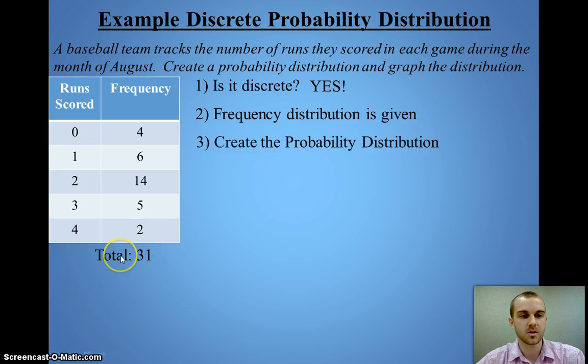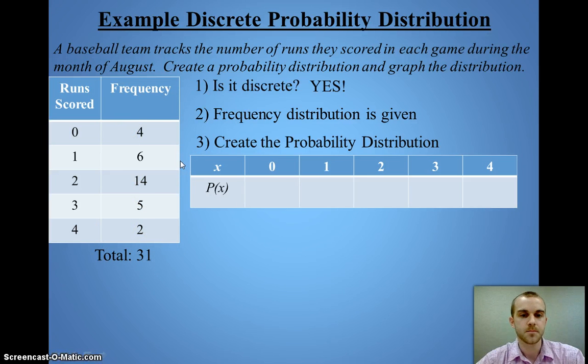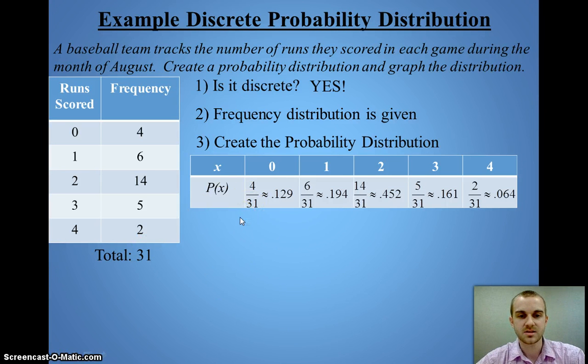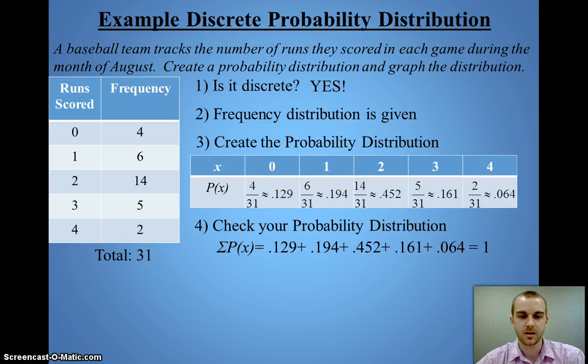I know there are 31 games that were played, and I could add up my frequencies to get that. I'm going to take each individual frequency and divide by the total. My last step is to double-check and make sure that this does add up to 1. So I take my 5 values, add them together, and they are equal to 1.